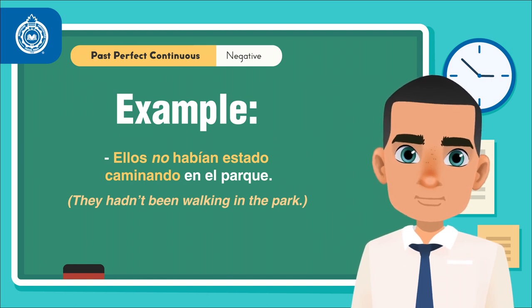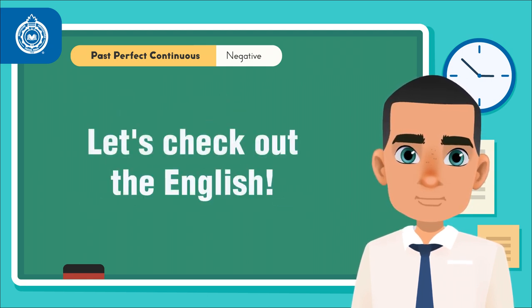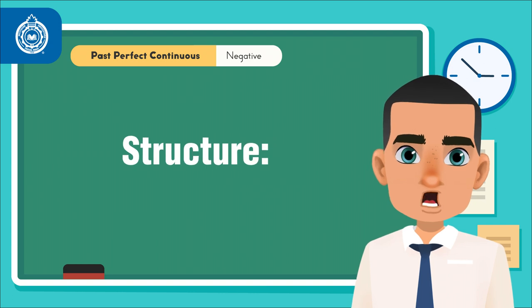Okay, now that you have seen how to form the past perfect continuous in Spanish, let's check out the English. The structure is as follows.